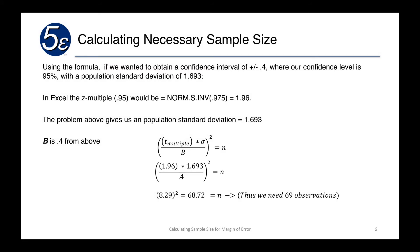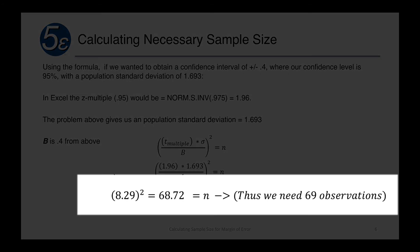Solving for this, we end up with n equals 68.72. But since these are required samples, we can't really have a decimal, so we'll round it up to say we need 69 observations.